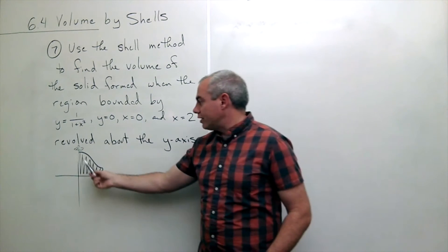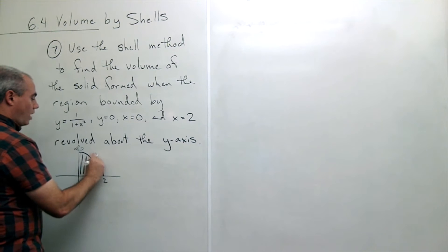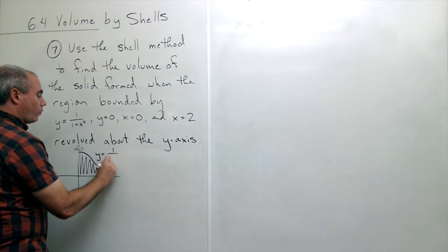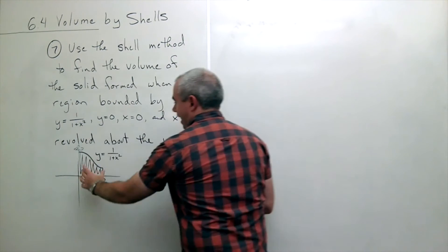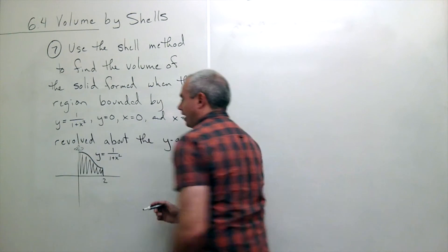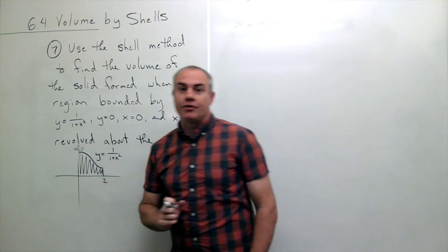Okay so I've drawn the curve up here. This is the curve y equals 1 over 1 plus x squared. And now we're going to take this region that's bounded by those four curves and we're going to spin it around the y-axis.